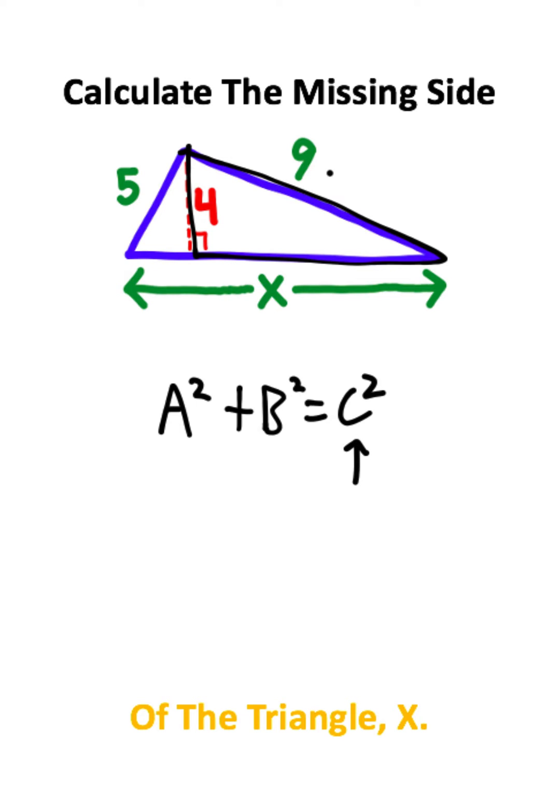The c term refers to the longest side of the right triangle, which is known as the hypotenuse. The a and the b are just the other two legs of the triangle.